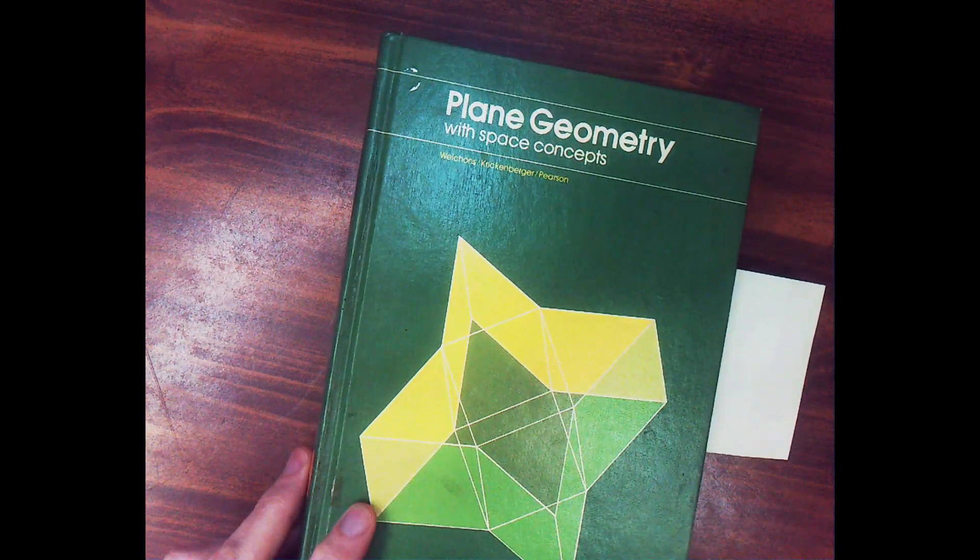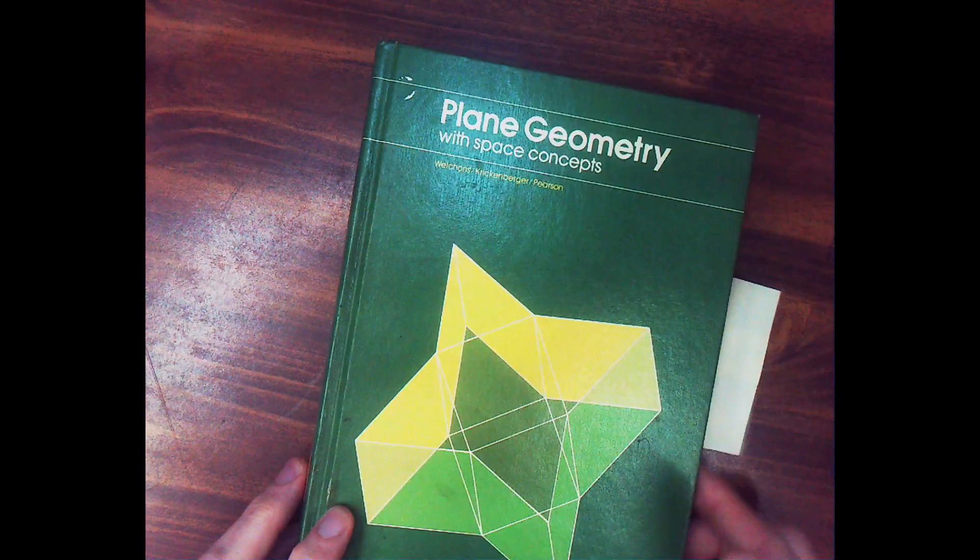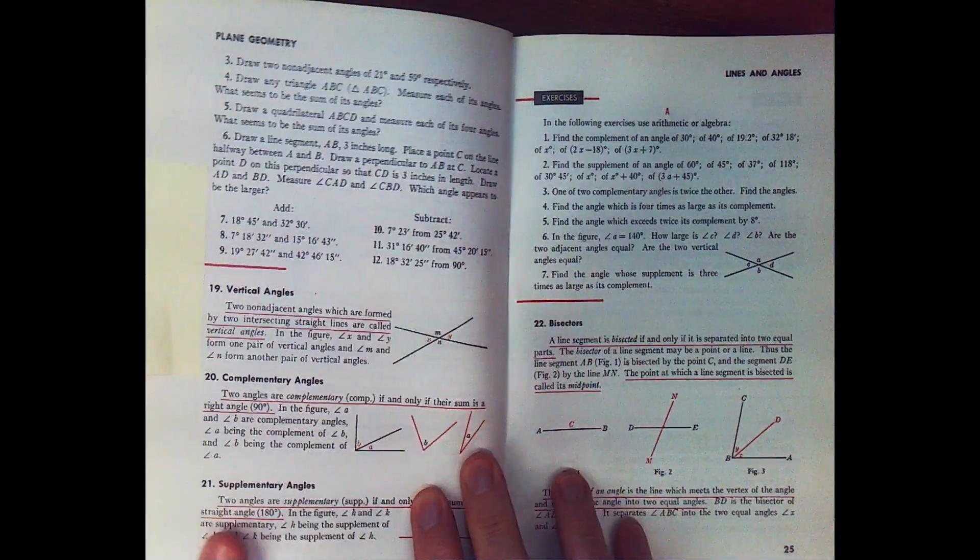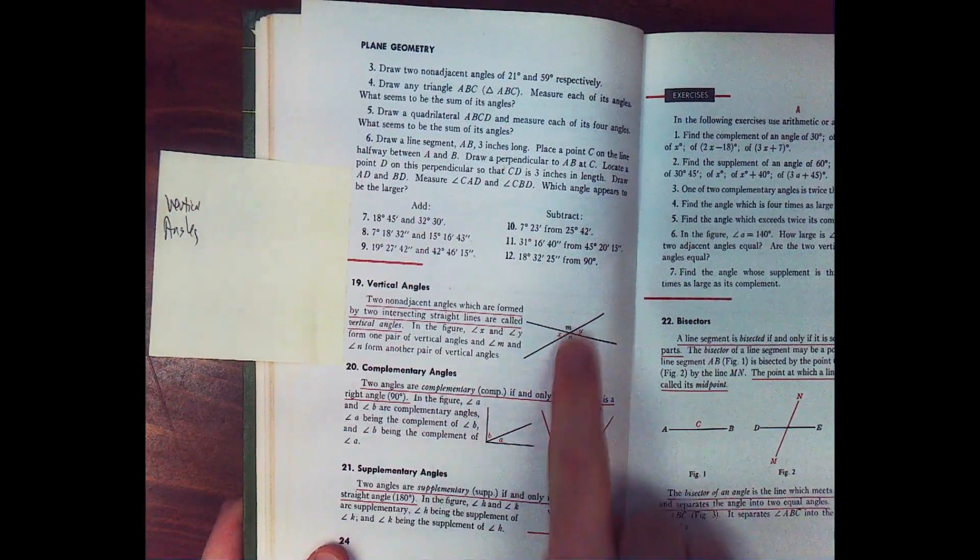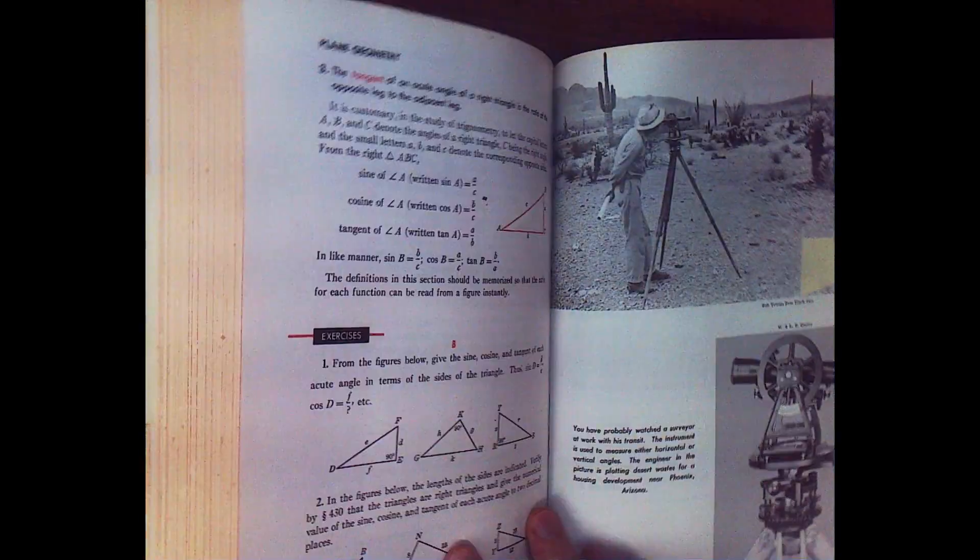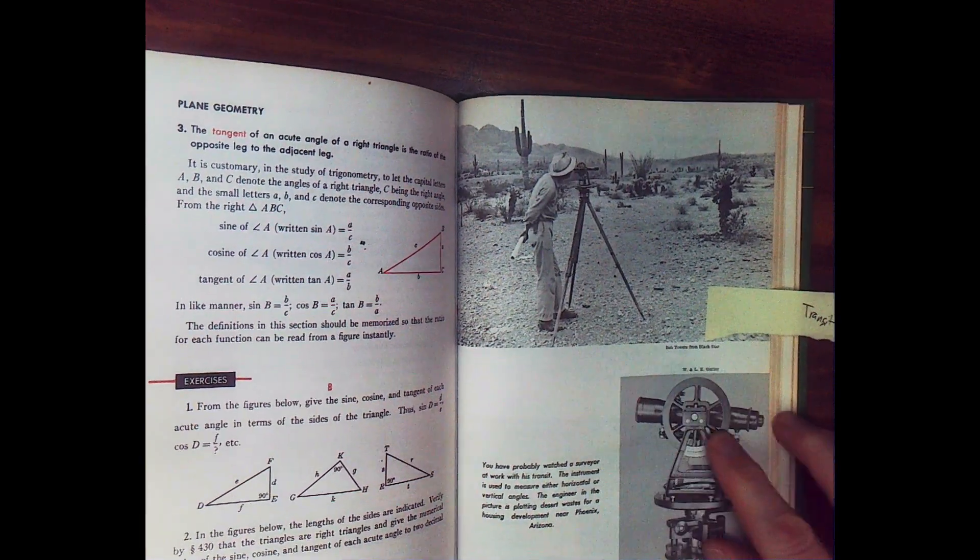Now here's plane geometry. Horizontal and vertical are not in the index. But what's interesting is that it does have a definition of vertical angles. But then it actually has a section where it goes into a little bit of surveying. And it mentions that the surveyor measures horizontal and vertical angles using a transit.